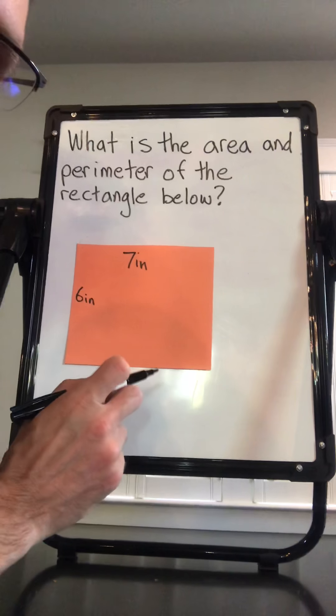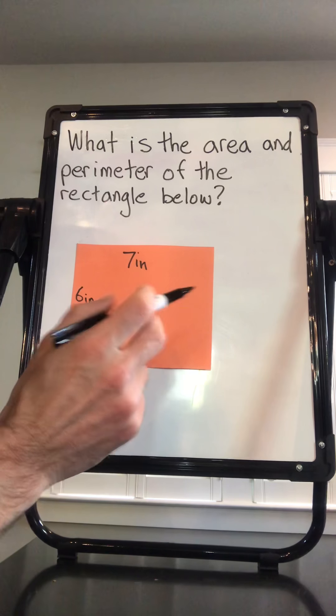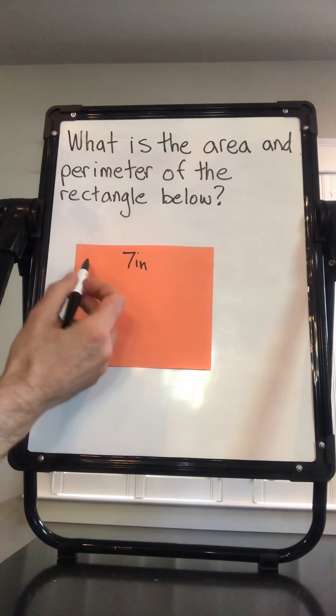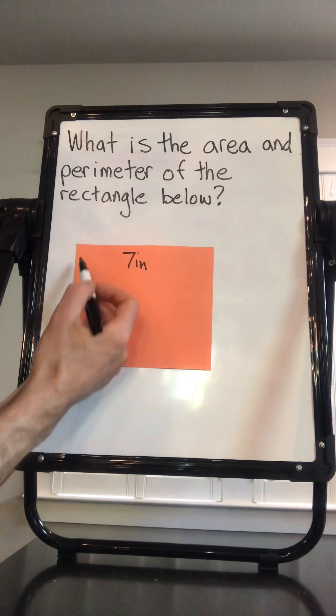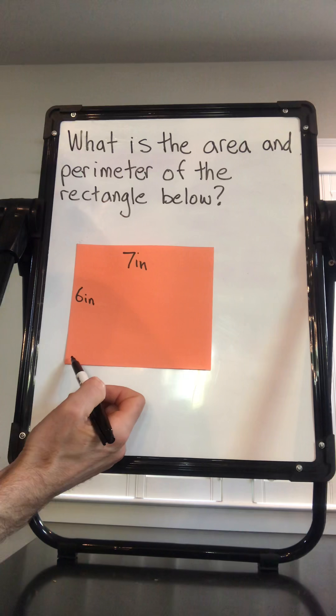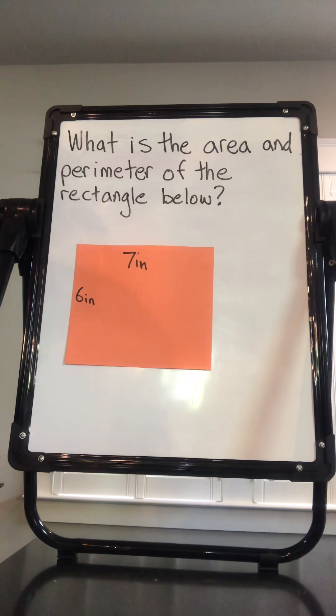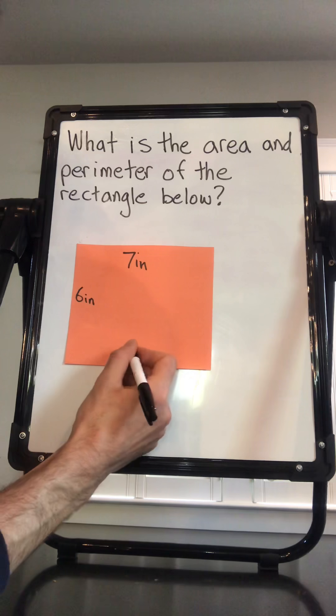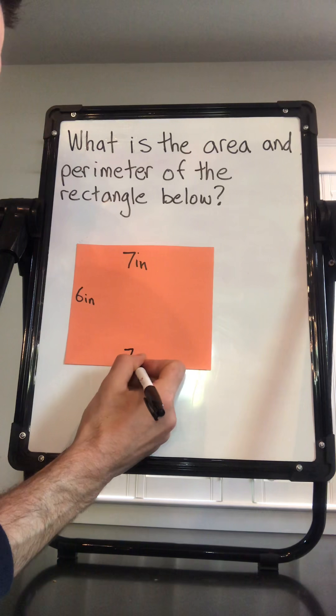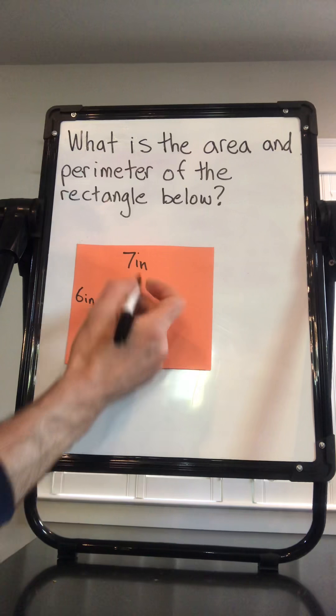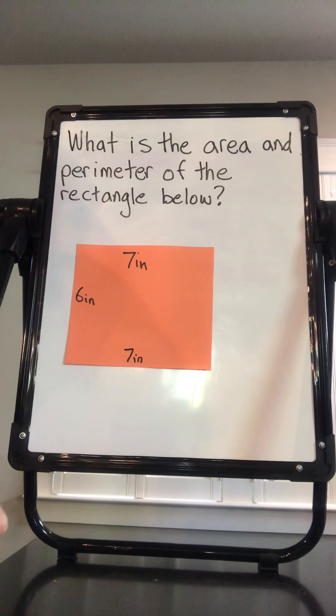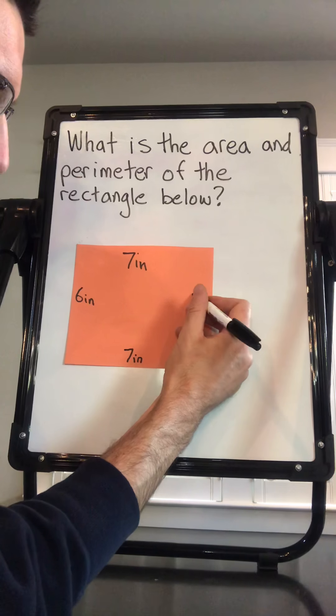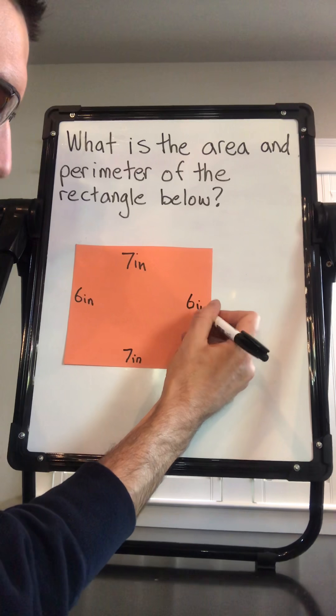All right. Let's solve our problem of the day together. So our problem again was, what is the area and the perimeter of the rectangle below? And the problem gave us that our length was seven inches and our width was six inches. Now, the first thing that you should do in solving a problem like this is you know that this is a rectangle. So I'm going to go ahead and write in the length on the other side of this rectangle. If this length is seven inches, I know this length is seven inches. I'm also going to write in the width. If this width is six inches, I know that this width is six inches.